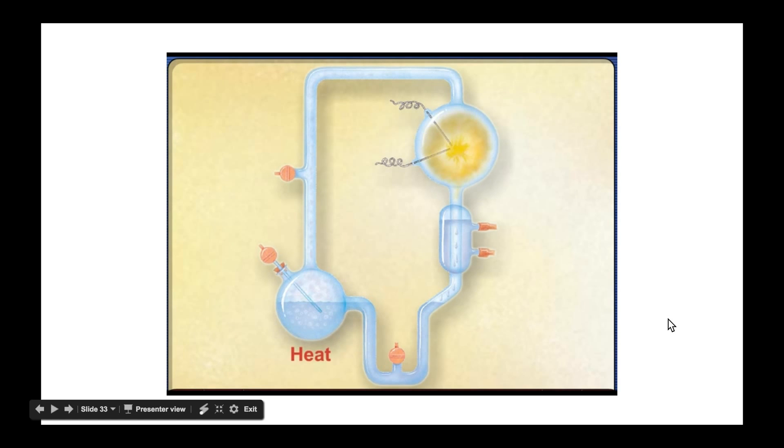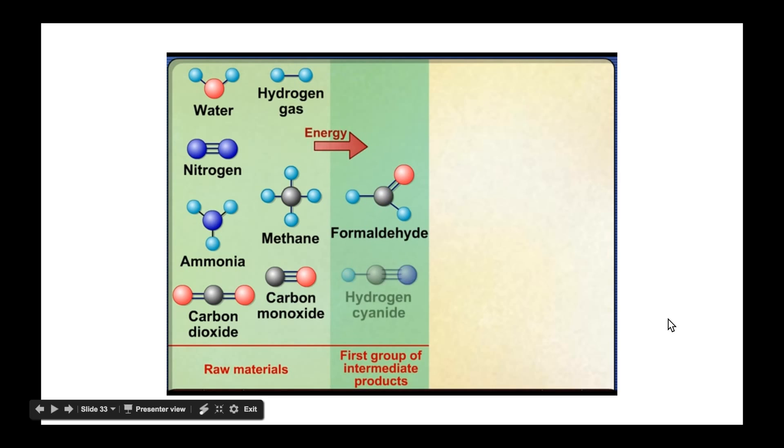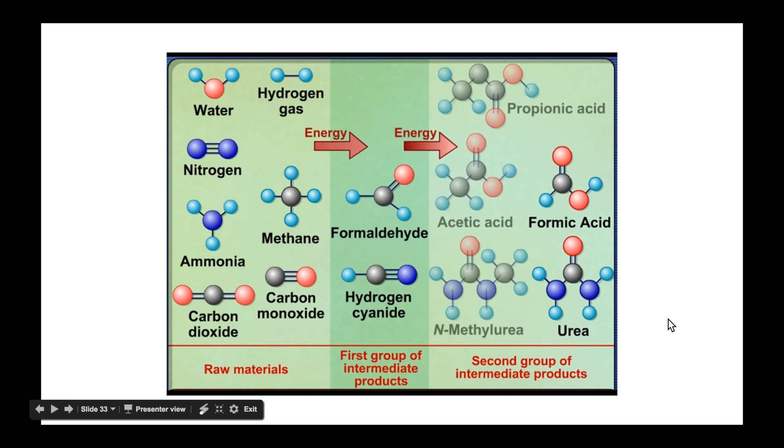The water was heated to form a vapor, and electrical sparks were generated to mimic lightning. This apparatus simulated the possible conditions of the early Earth. When the water was analyzed after one week, they found simple carbon compounds such as formaldehyde and hydrogen cyanide. These compounds then combined to produce formic acid, urea, and amino acids.